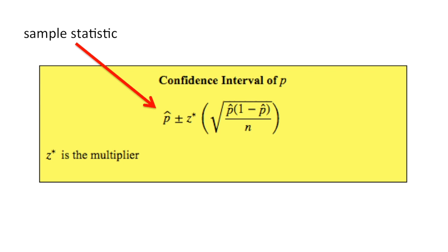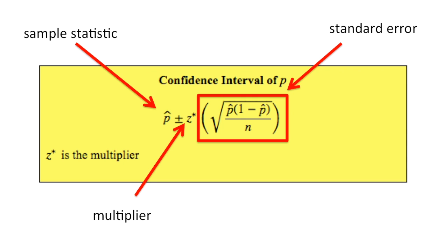The sample statistic, in this case the sample proportion, plus or minus the multiplier, because we're using the normal approximation method here, this is a z multiplier, times the standard error.